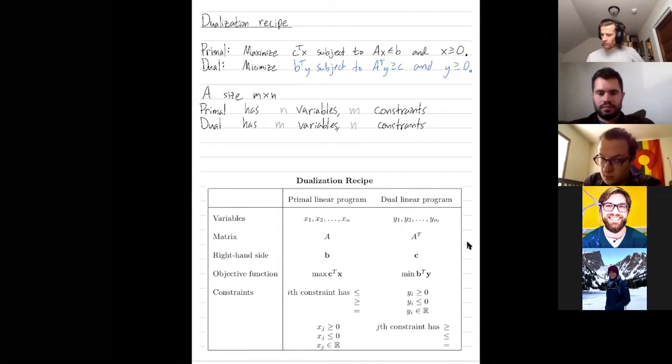The right hand side of our matrix equation goes from b to c, where c was previously our optimization function. The objective function goes from maximizing c transpose x to minimizing b transpose y.